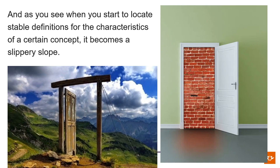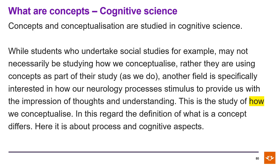In cognitive science, concepts and conceptualization are studied. While students undertake social studies, you might not necessarily be studying how we conceptualize — you're rather looking at concepts as part of your study. The cognitive science field is specifically interested in how our neurology processes stimulus to provide us with the impression of thoughts and understanding. This is the study of how we conceptualize, and in this regard the definition of what a concept is differs.